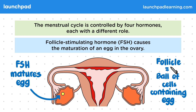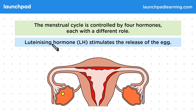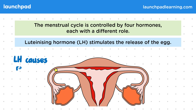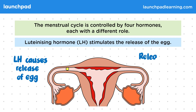Luteinizing hormone, or LH, stimulates the release of the egg. So, the egg is released because of luteinizing hormone. Again, for the exam, you need to know the full name of this hormone — luteinizing hormone — as well as its role. This release of the egg is called ovulation.